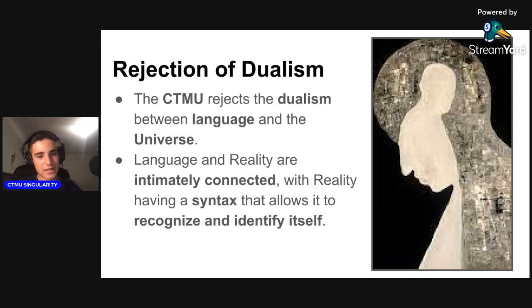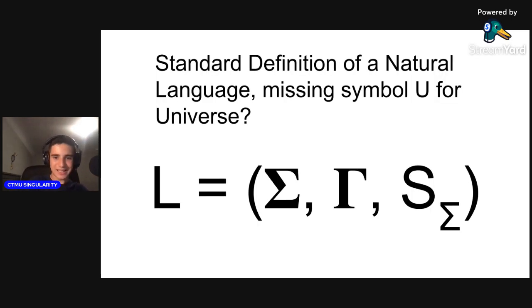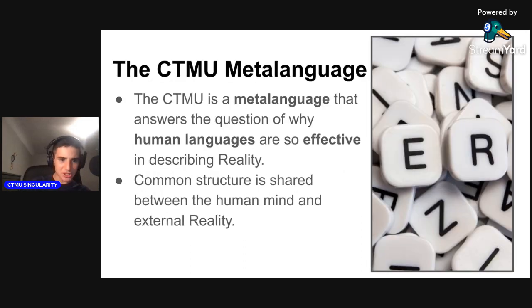The above definition L = (Σ, Γ, S_Σ) is therefore misleading in the way that its parentheses, like impermeable walls, isolate human cognitive language from the universe it so effectively but improbably represents. The question the CTMU meta-language answers is the unreasonable effectiveness of natural language in reality at large, which is a generalization of the unreasonable effectiveness of mathematics in the physical sciences—a philosophical question of how does mathematics connect to physics, and why does this mathematical structure show up in our universe? But even more generally, why can we describe the universe using language?